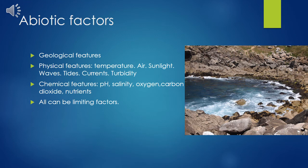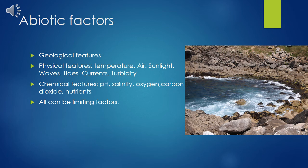Different abiotic factors also have a huge influence on where species are found. Geological features are one — we've already discussed the difference between a rocky coast and a sandy coast. Physical features such as temperature, air exposure, sunlight, waves, tides, currents, and turbidity matter a great deal. Coral reefs, for example, are very particular: they require the right temperature, no air exposure, the right amount of sunlight, limited wave action, and clean water with no turbidity. Chemical factors including pH, salinity, oxygen, carbon dioxide, and nutrients can also have a huge effect — corals are equally demanding of the right pH and salinity in a tank.